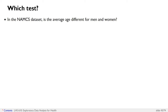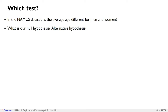In the NAMPSIS dataset, let's say I asked you: is the average age different for men and women? Our null hypothesis is that the average age is no different for men and women, because that's the opposite of our actual question, which is looking for a difference. Our alternative hypothesis is that the average age is different for men and women.